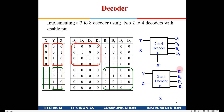When X is 0, the first chip is enabled — for Y=0,Z=0 D0 goes high; for 01 D1; for 10 D2; for 11 D3. When X becomes 1, the first chip gets disabled and all its outputs go to 0. The second chip is now enabled via X directly. For 00 D4 goes high, for 01 D5, for 10 D6, and for 11 D7. This is how a 3-to-8 decoder is implemented using two 2-to-4 decoders.